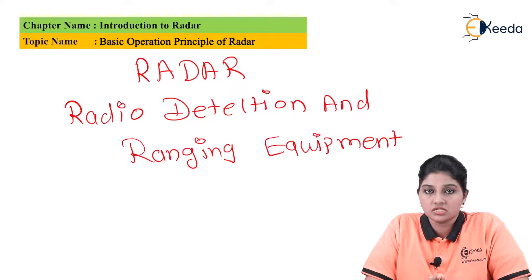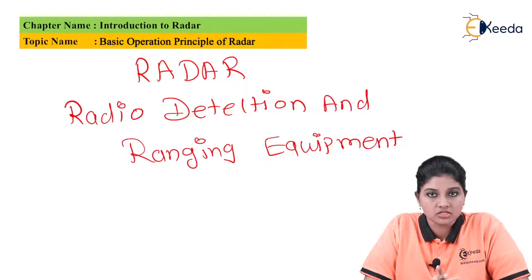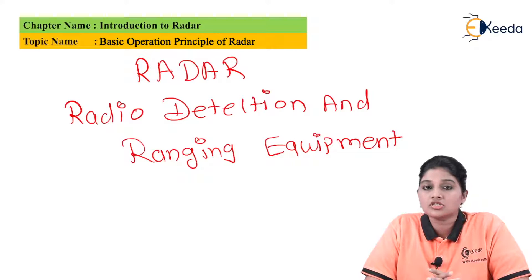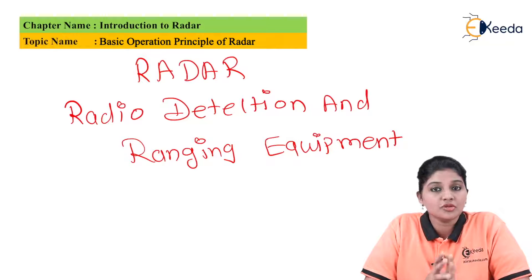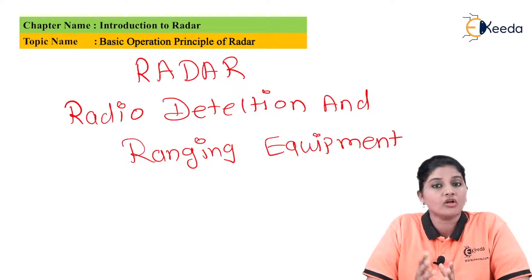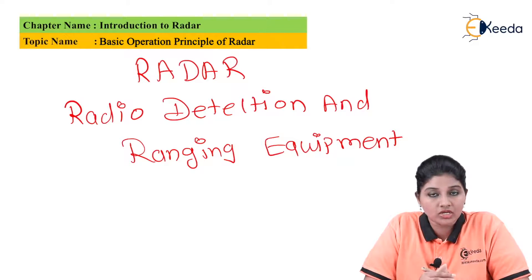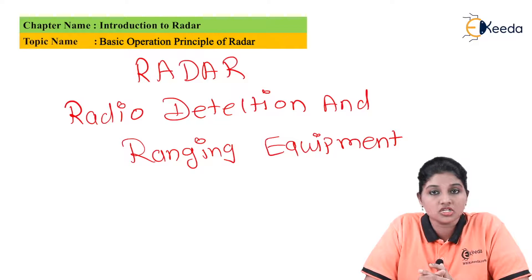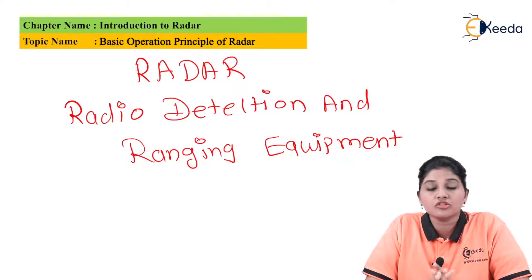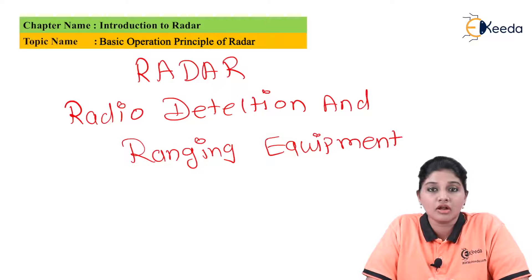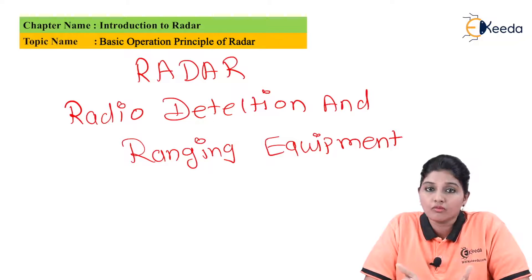Irrespective of these disadvantages, there are several advantages provided by the radar system. For example, it can be used in daytime as well as nighttime, and in any weather condition or season — in fog, cloudy conditions, rain, or haze. Therefore, there is no restriction on the use of radar based on weather conditions.